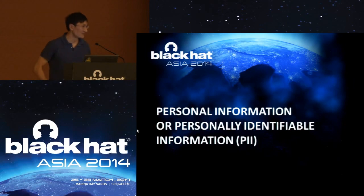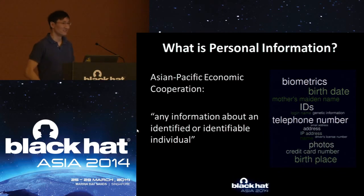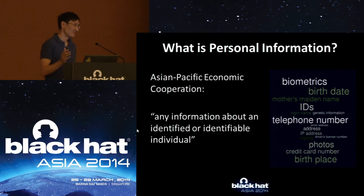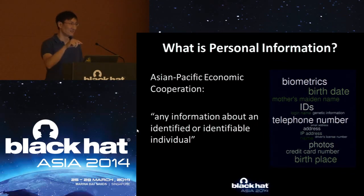Now let's talk about personal information, or as it's often called in the U.S., PII — Personally Identifiable Information. This is the Asian-Pacific Economic Cooperation definition, since we're in Singapore: 'any information about an identified or identifiable individual.' Other organizations around the world have similar definitions. What this means is things like biometrics, birth date, name, address, or credit card number can be used to identify somebody, and any information attached to that identifying information would also be considered personal information.